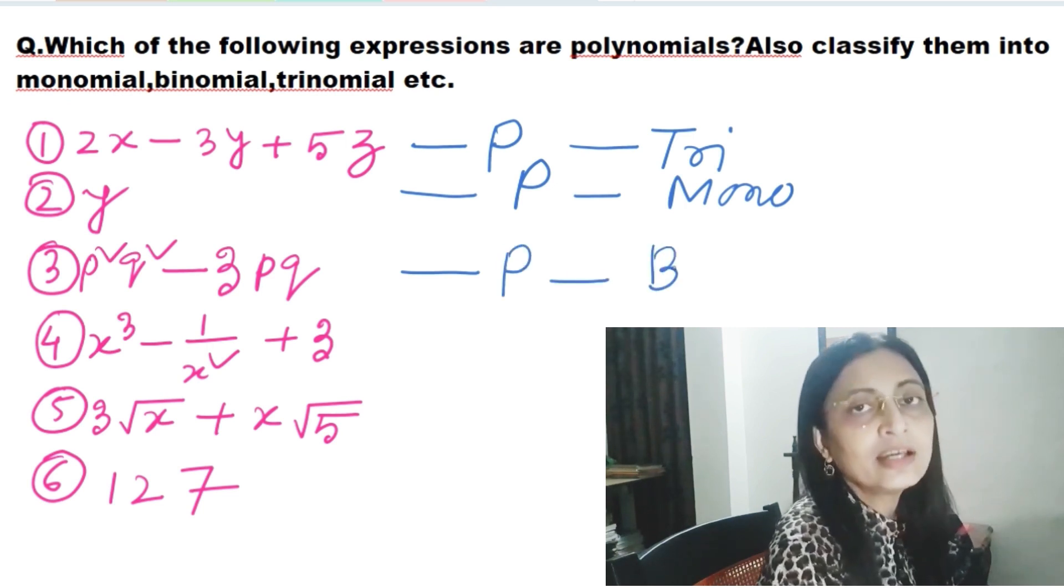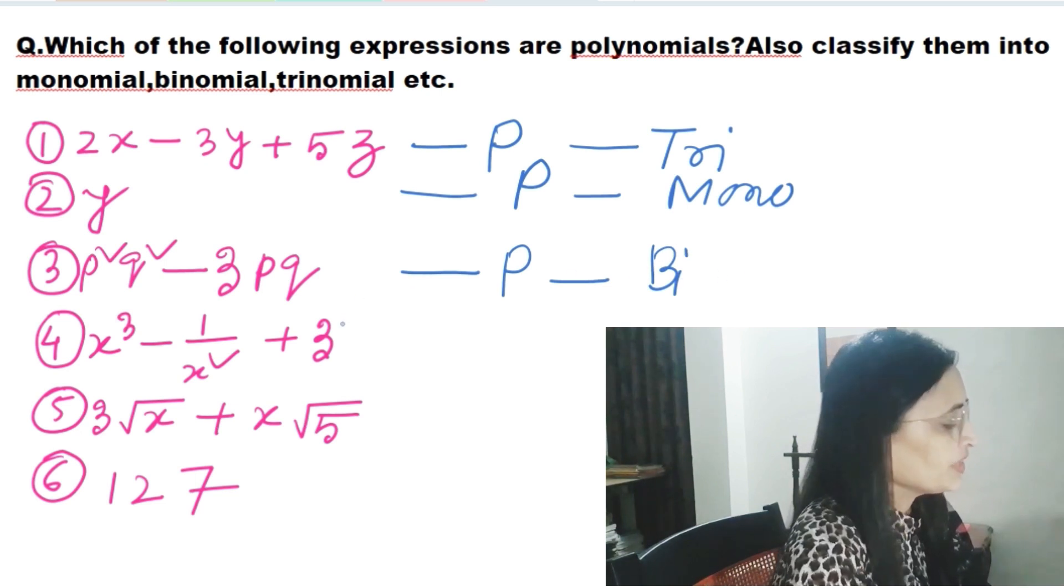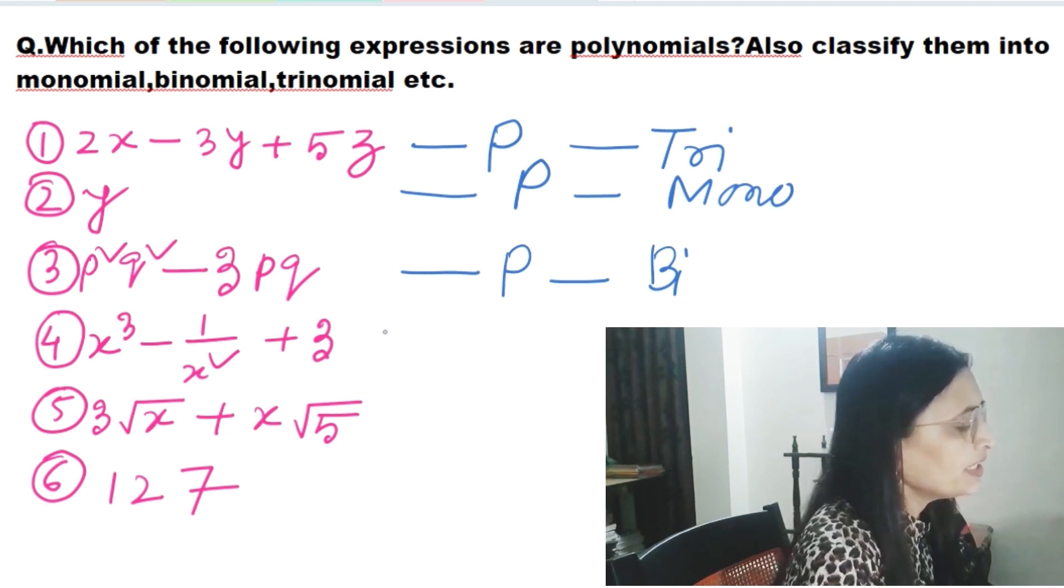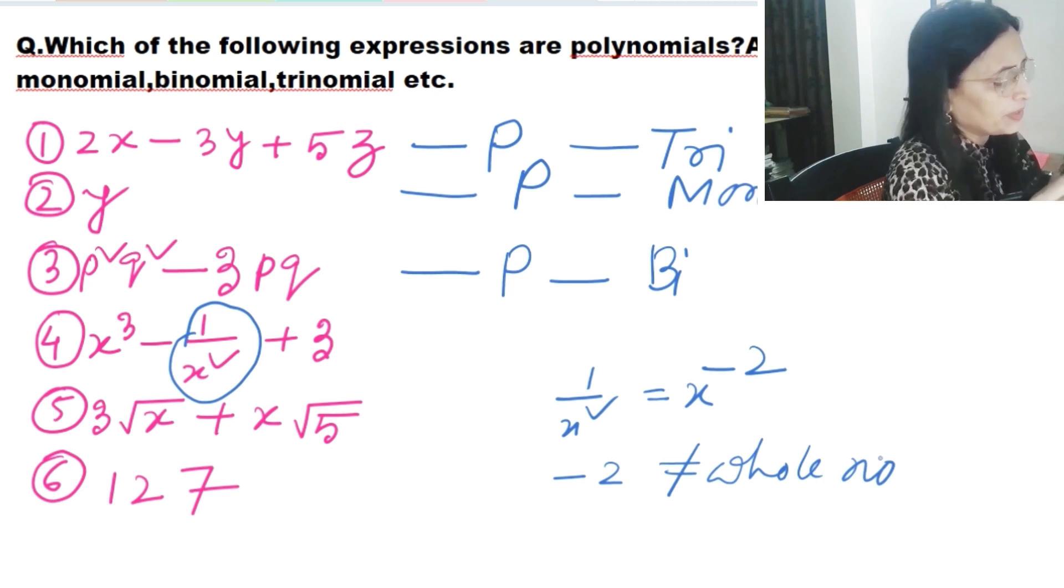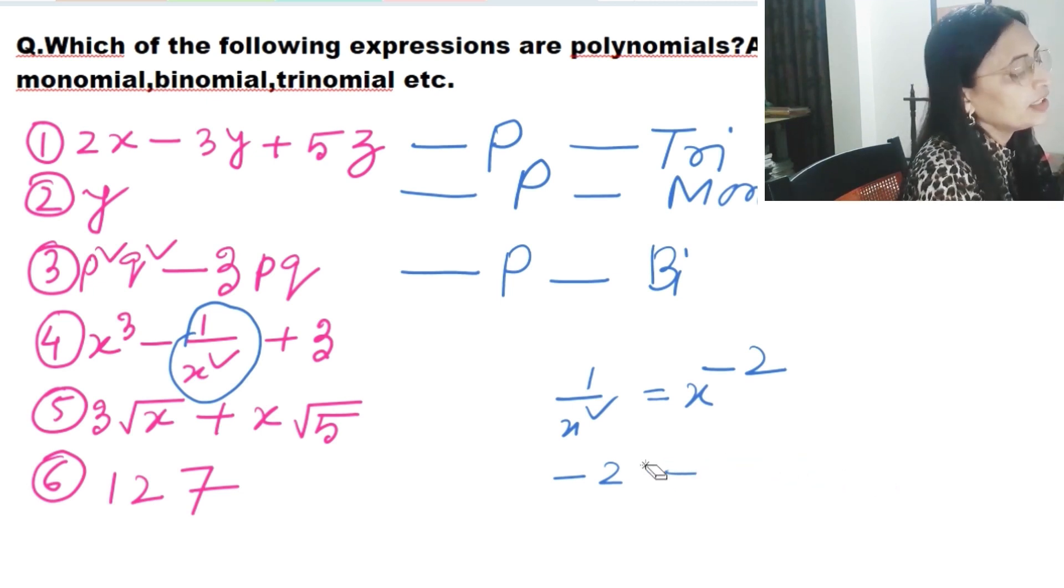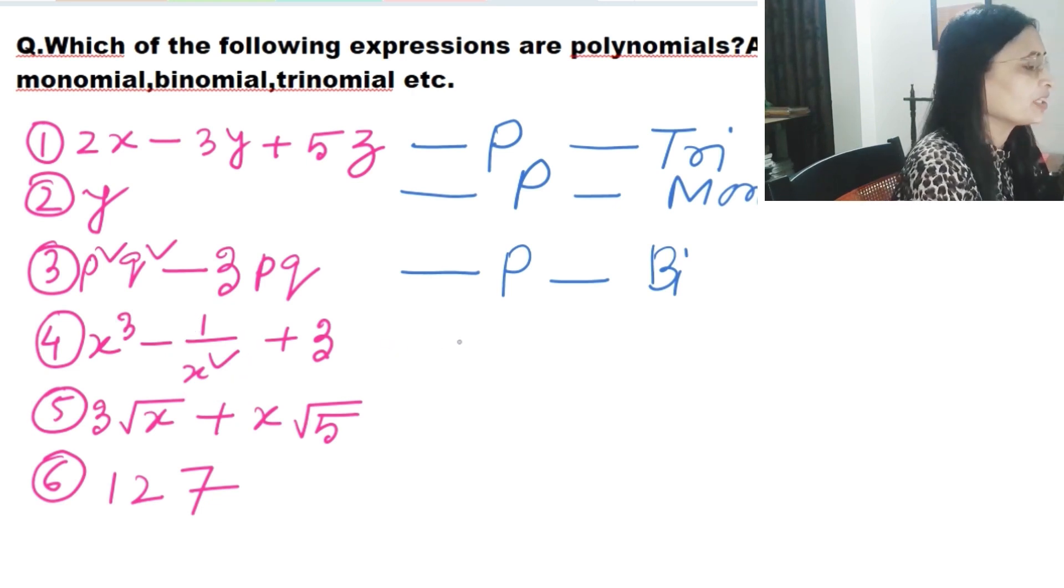Next one: x cube minus one by x square plus 3. In this, one by x square is a confusing one. You see, one by x square we can write like x to the power minus 2. Here exponent, that means power, is minus 2, which is not a whole number. In the definition of polynomial, the power of these variables must be a whole number. We know whole numbers are zero along with all positive integers: 0, 1, 2, 3, 4, 5, 6, etc. So minus 2 is not a whole number, so this is not a polynomial.